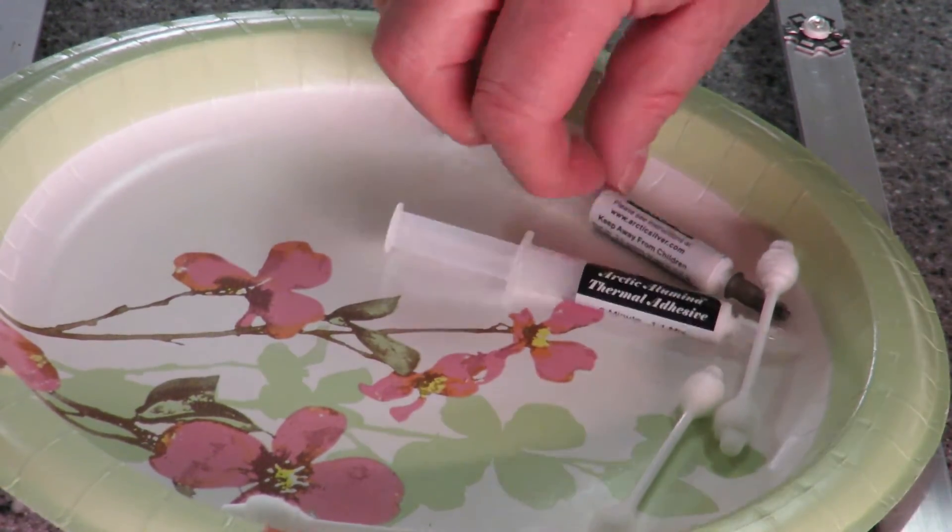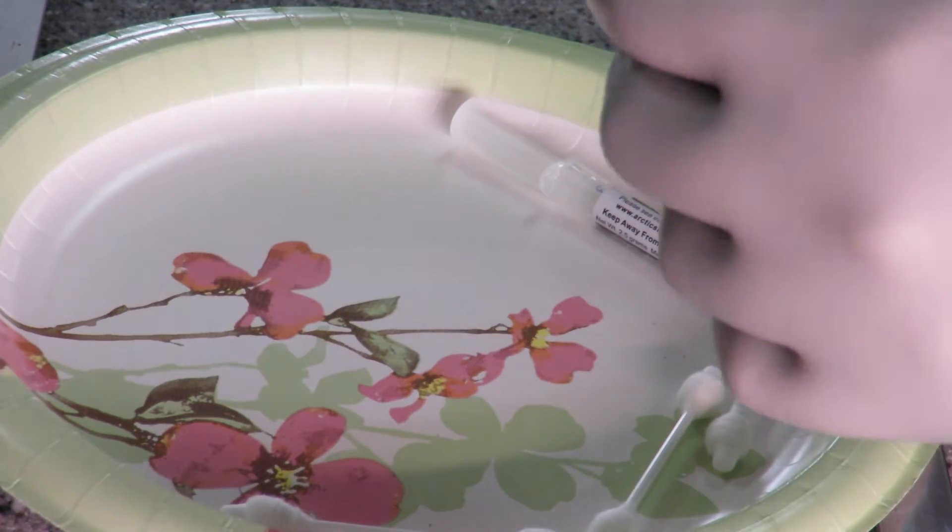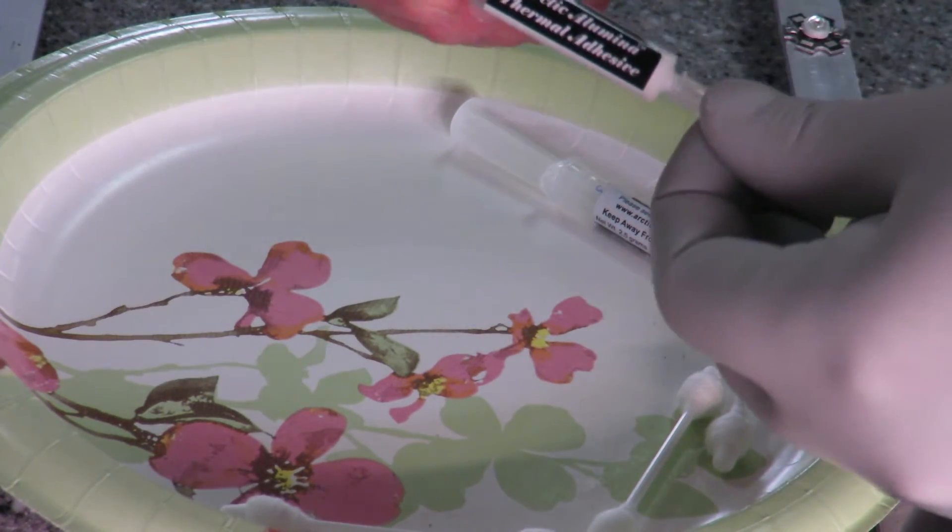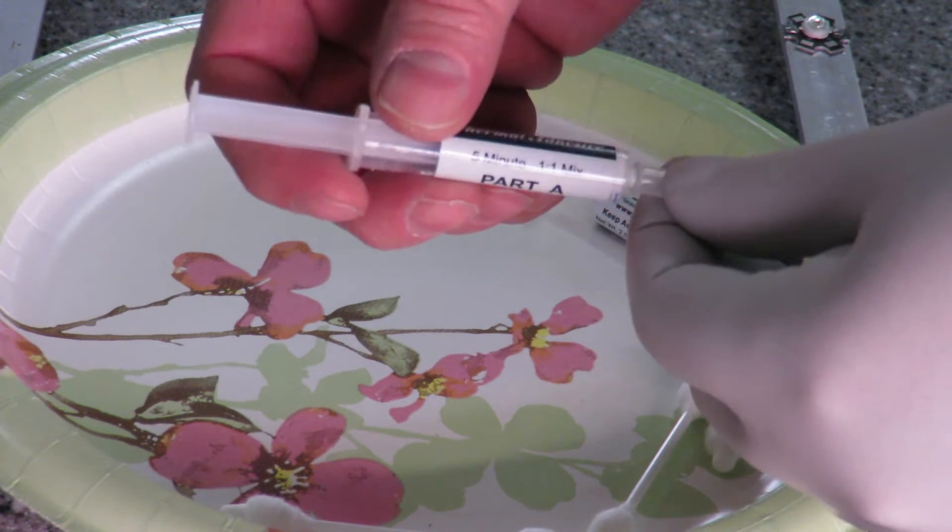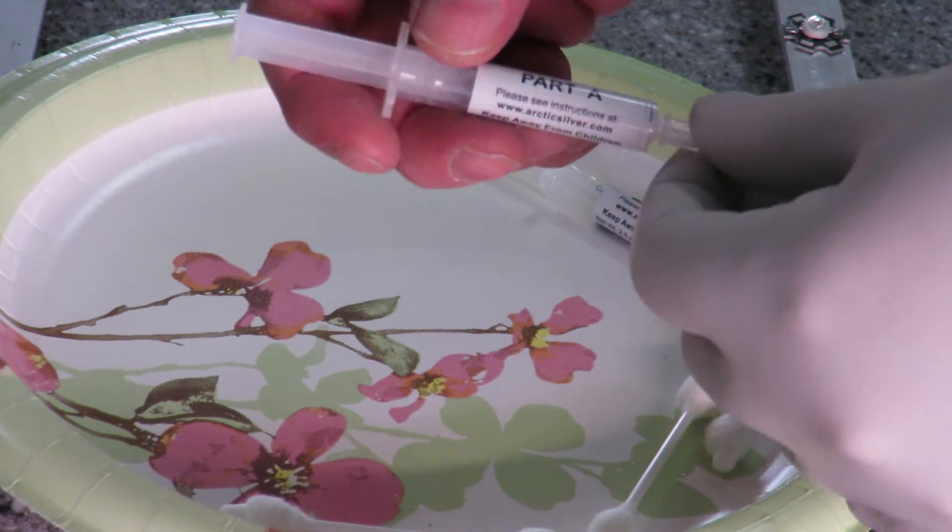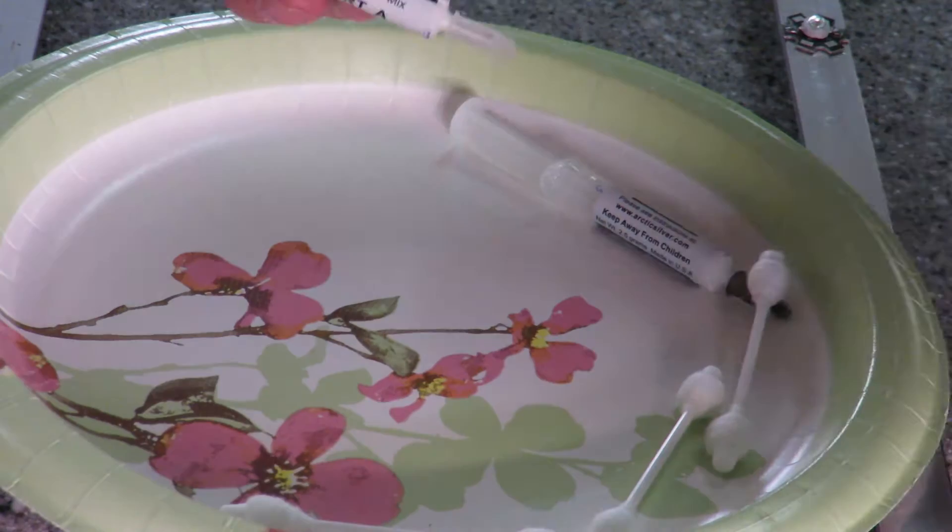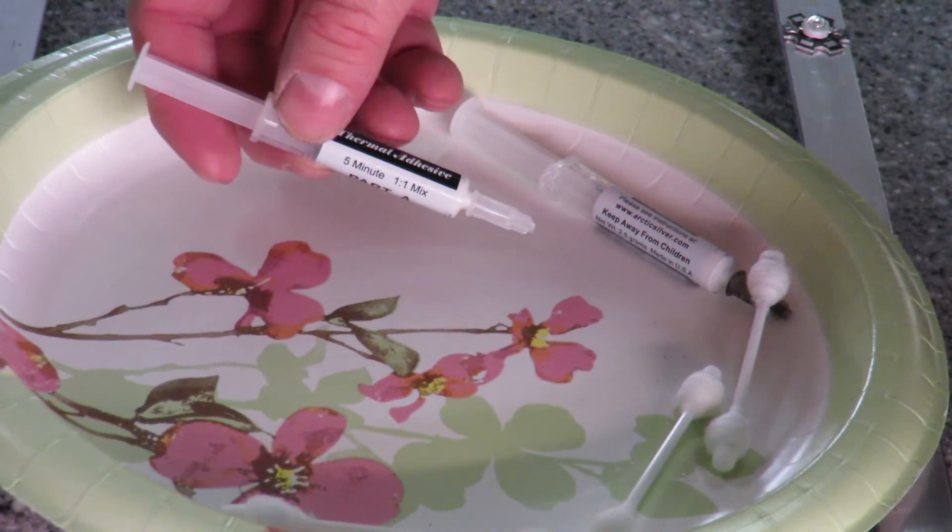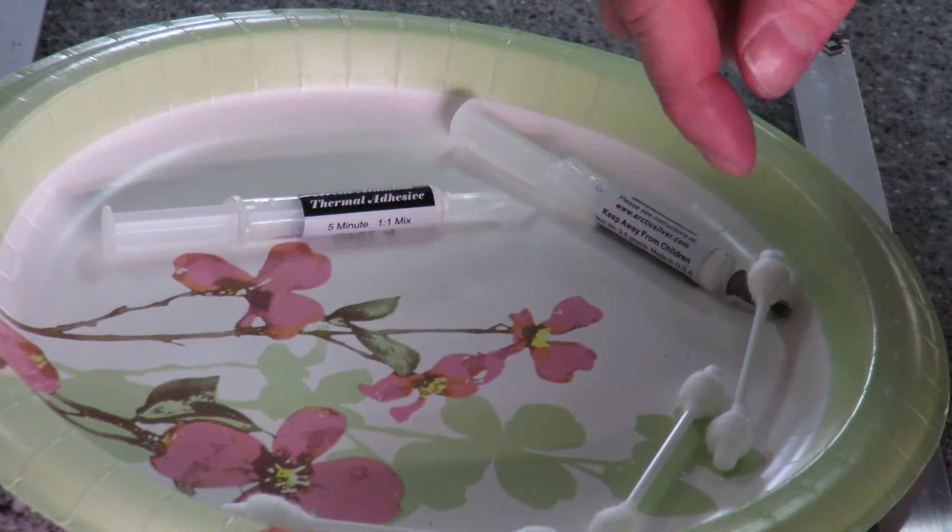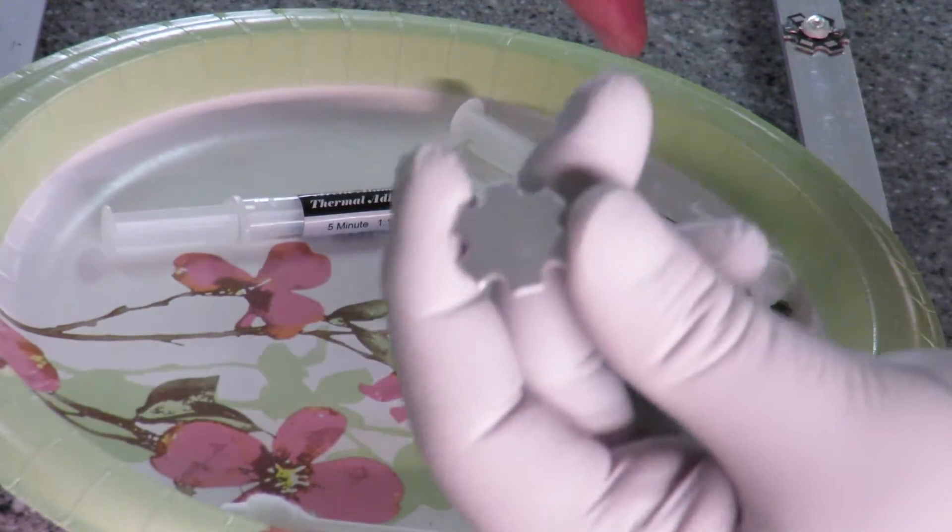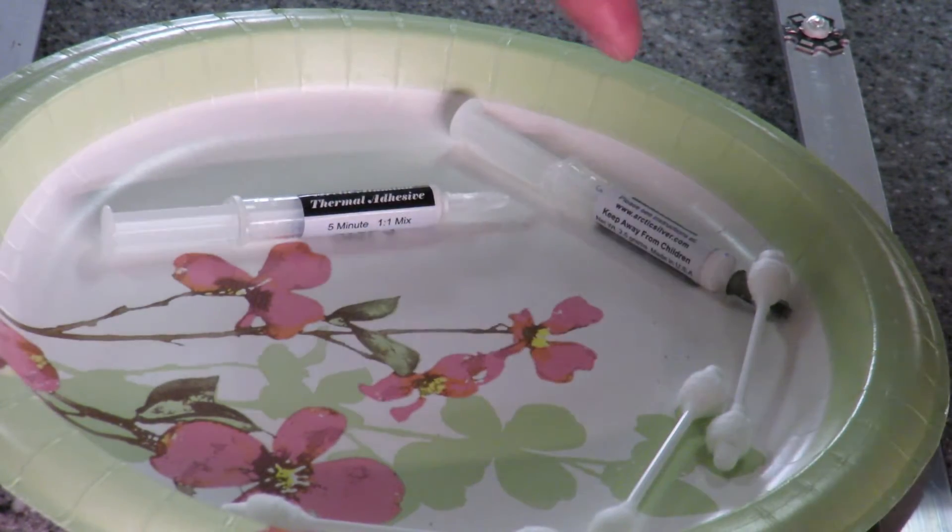Now this Arctic alumina bonding cures in about five minutes, and you want to mix it one to one. You don't have a whole long time to work, so you just want to use just a little bit at a time. Once you do that, then you want to start applying it to your LEDs and then sticking them on right away.